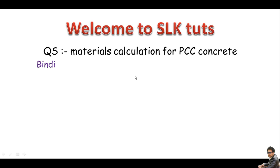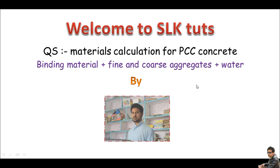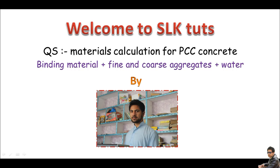Materials here means the binding material plus the fine and coarse aggregate, and of course water — these are what make the PCC. In this section you'll learn binding material calculation, fine and coarse aggregate calculation, and water quantity for PCC work. I won't explain water calculation here since I've already uploaded a video on water calculation for concrete mix in this channel. I'll discuss binding material like cement, fine aggregate like sand, and coarse aggregate like crushed stone.